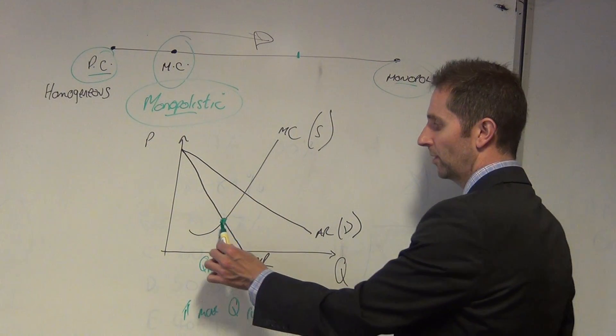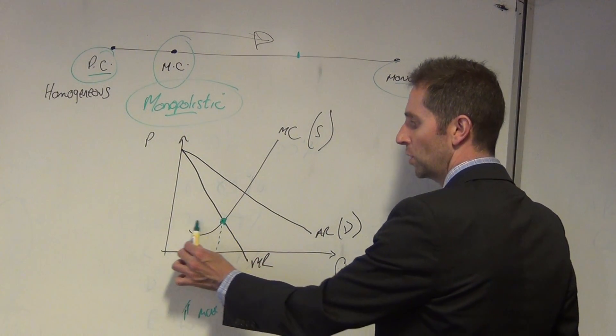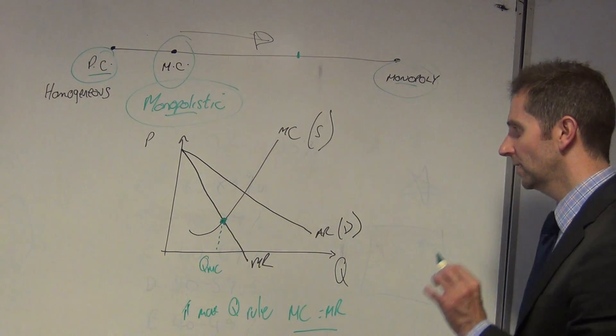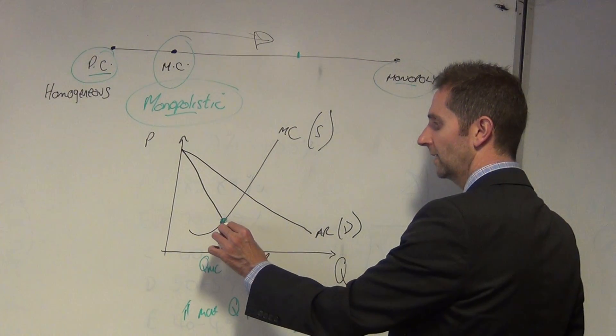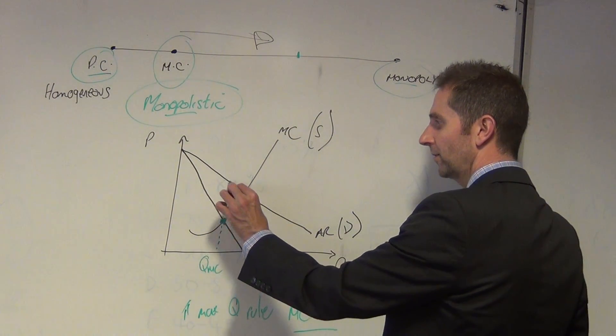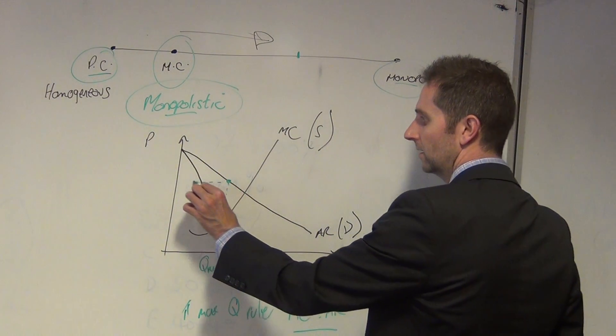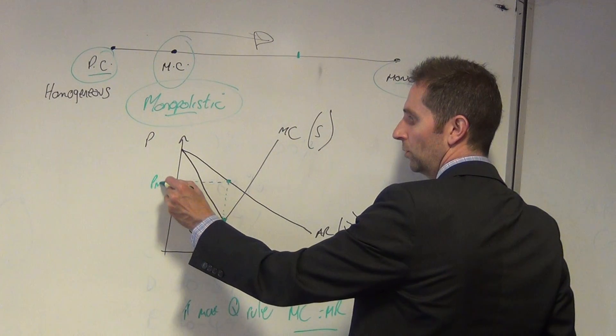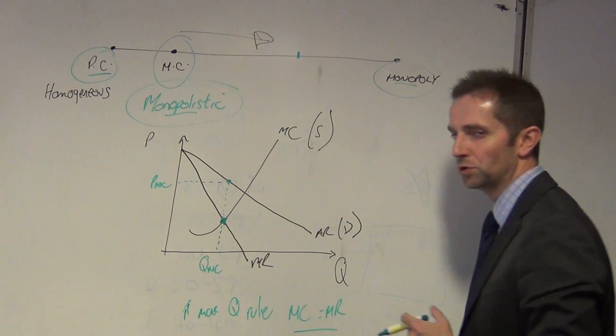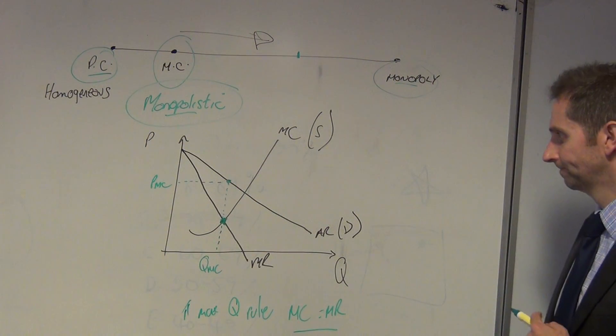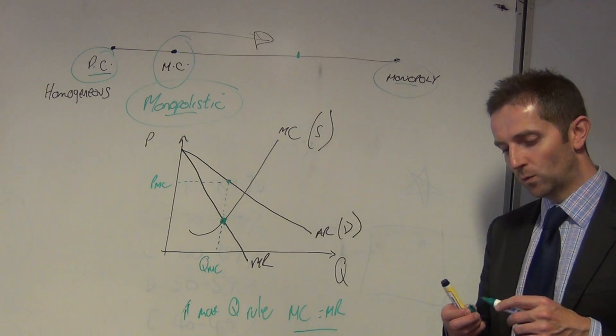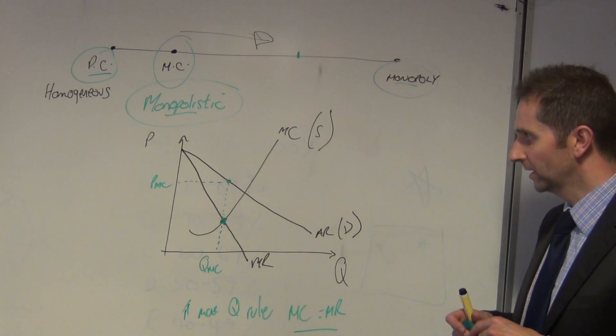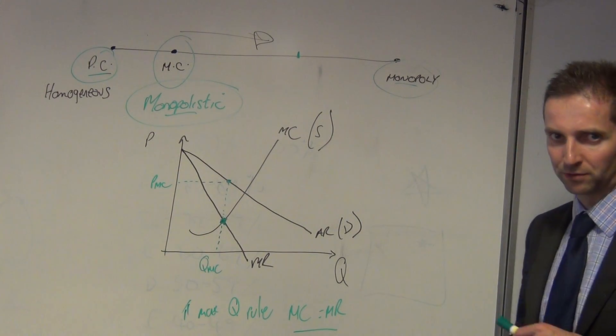From there we can then take our output point, which is QMC. And in order to get the price, once again as I mentioned in the monopoly explanation, don't take your price point from there. We need to take the price point from the demand curve. So up and then across, and so this is our monopolistic competition price level.